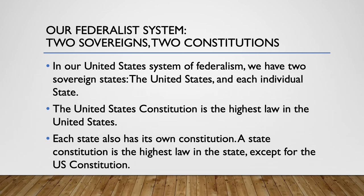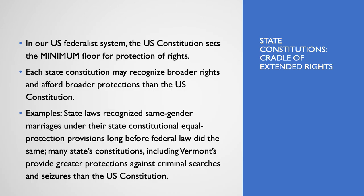In our federalist system, which we talked about in looking at sovereignty, we have in the United States two sovereigns, and therefore we are always under two constitutions. The United States Constitution is the highest law in the United States, but each state also has its own constitution, and that is the highest law in that particular state — except for the U.S. Constitution.